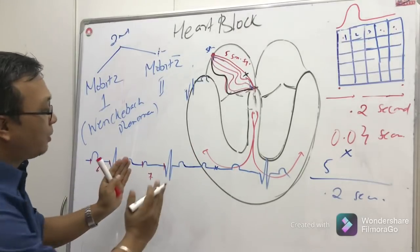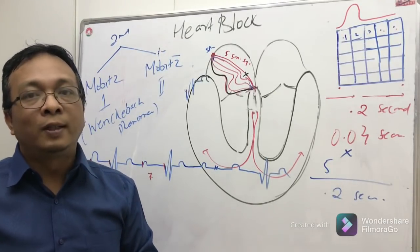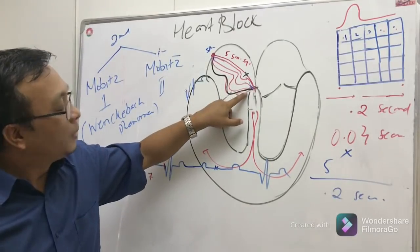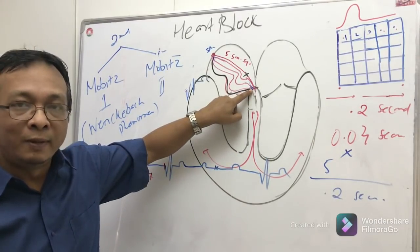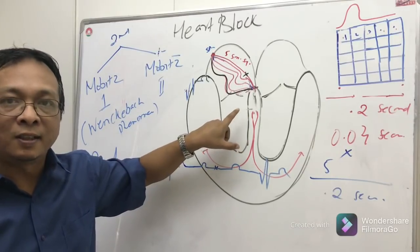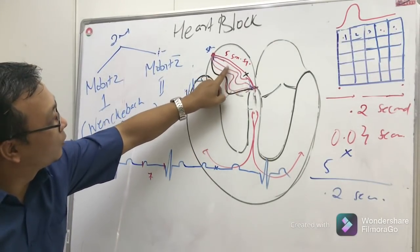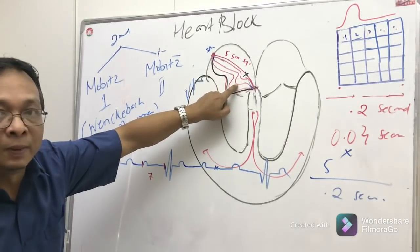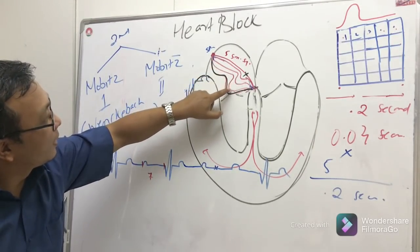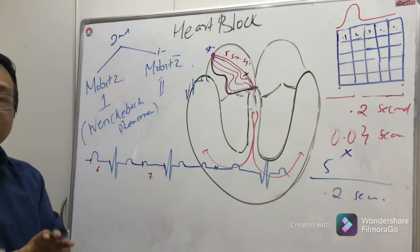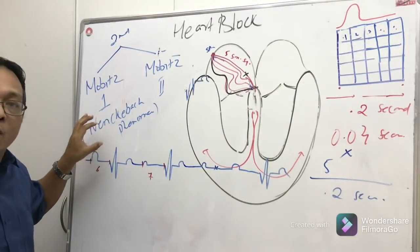On the ECG in Mobitz Type 1, you will see the PR interval gradually increasing — for example, six small squares, then seven, then eight — and then there is a missed QRS complex, because the ventricle could not contract when that impulse was blocked at the AV node. That pattern of increasing PR followed by a dropped QRS is the Wenckebach phenomenon.